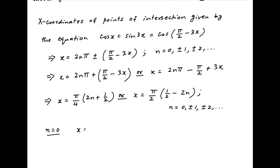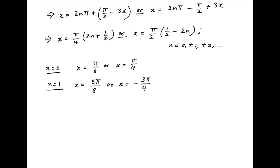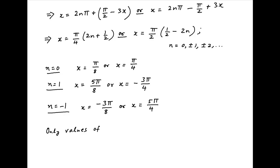When n = 0, x = π/8 or x = π/4. Putting n = 1, x = 5π/8 or −3π/4. Putting n = −1, x = −3π/8 or 5π/4. Note that when n = ±2, ±3, and so on, the values of x obtained lie outside the interval −π/2 to π/2.